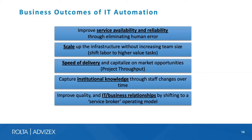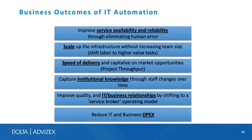Capturing institutional knowledge through staff changes is important because IT departments depend on tribal knowledge. If staff changes or turnover occurs, that institutional knowledge is lost without automation. Improving IT-business relationships through a service broker operating model means IT is so effective at delivering infrastructure services that the business relies on IT rather than going to the public cloud. Automation also reduces both IT and business operational costs.